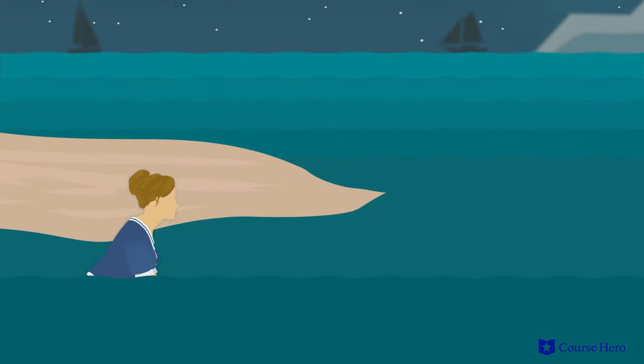After the party breaks up, Edna and Robert walk with a group down to the beach. Edna decides to attempt to swim. She's been trying to learn to swim all summer without success. This time, she stays afloat.